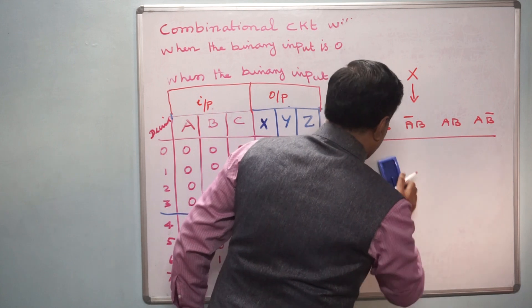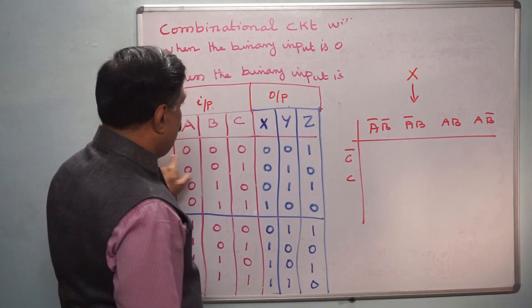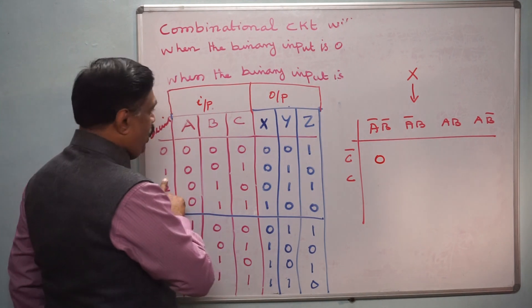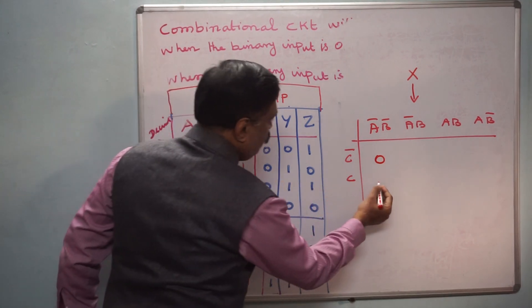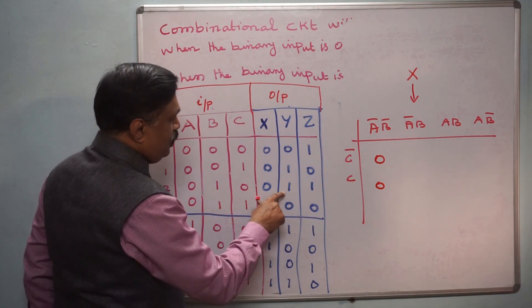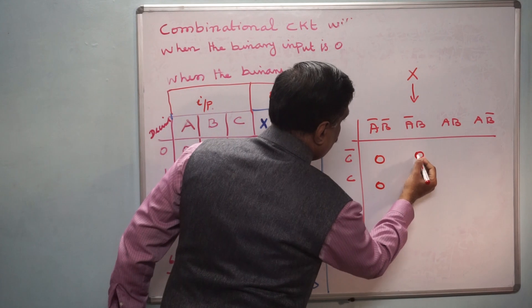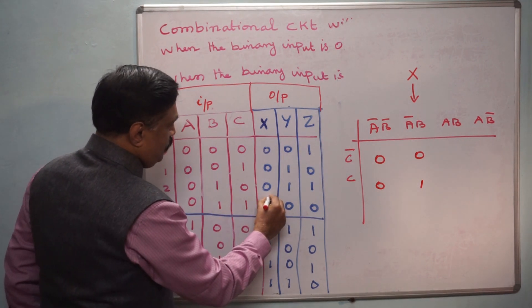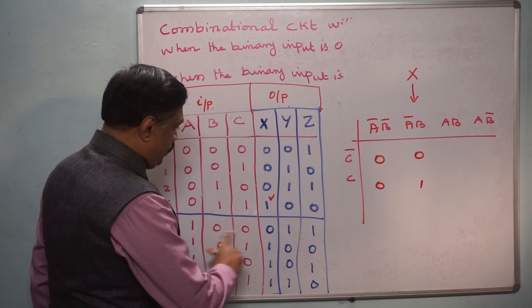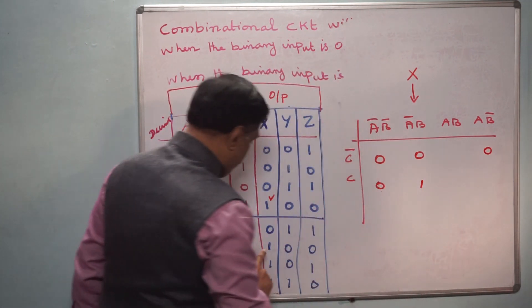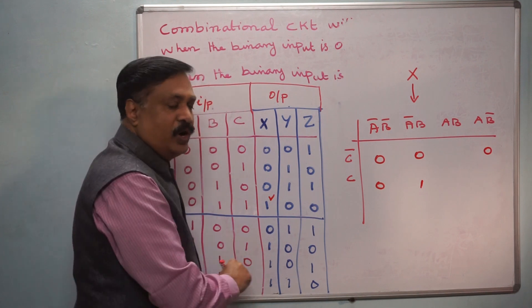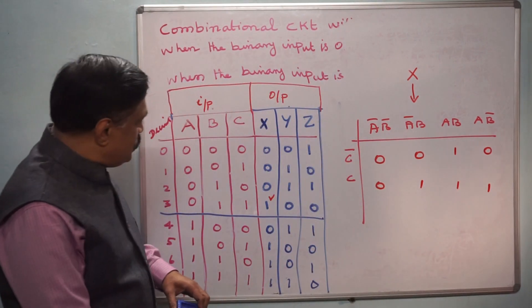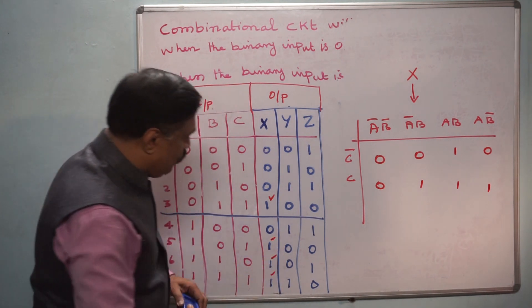Now I am going to substitute 1 in the proper cells. For decimal 0, the output of X is 0 — so this cell is 0. For 1, output of X is 0 — this is 0. For 2, it is also 0. For 3, we have 1 — so cell 3 gets a 1. For 4, we have 0. For 5, 6, 7, we have 1 — so cells 5, 6, and 7 get 1. There are 4 ones substituted.